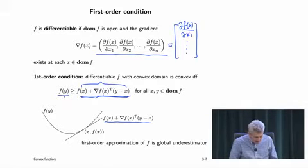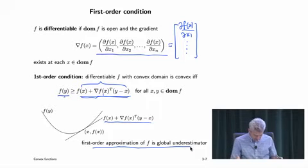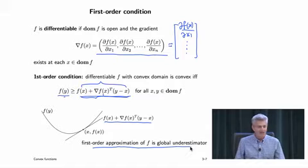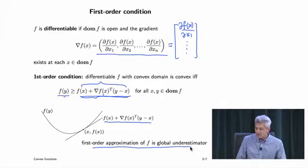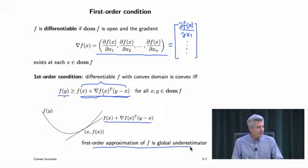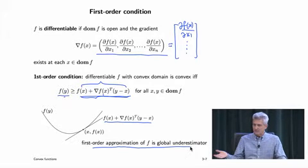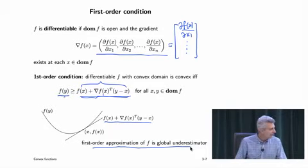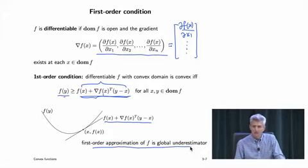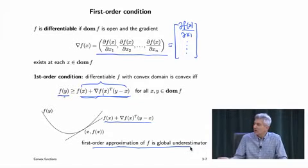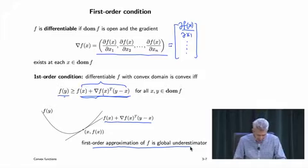This is very important and will come up later in convex optimization. When you have a solution to a problem with a thousand variables, someone asks how you know it's optimal. The answer will be this inequality — because R^1000 is a giant space you can't exhaustively check. The whole thing is constructed on the basis of a global, asymmetric inequality. That's what it is.